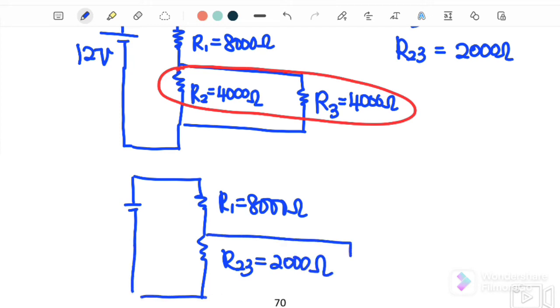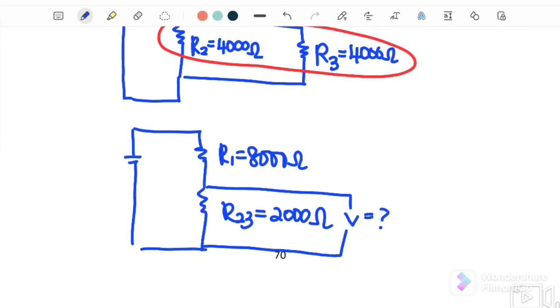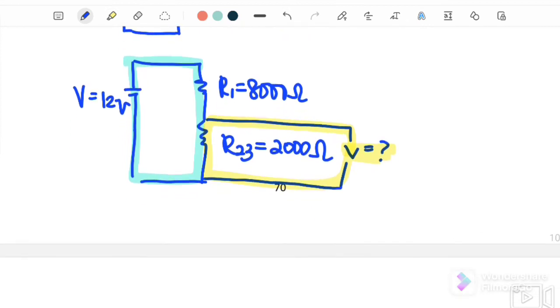We want to measure what is the potential difference across this R23. Again, we can highlight the loops. This is V1, the bigger loop, and this is the smaller loop. We want to find the value for V2. We can use the ratio as well: V1 over V2 equals R1 over R2.